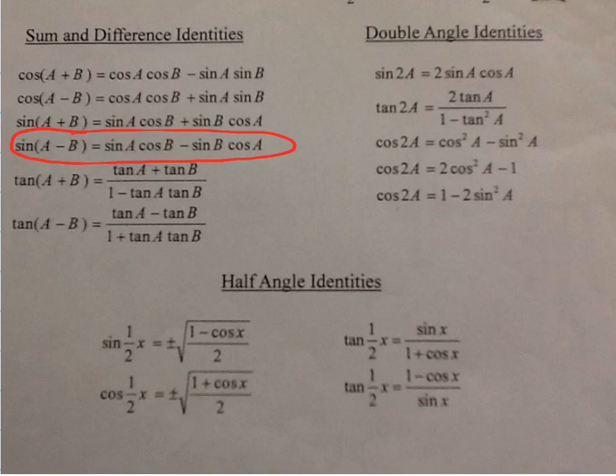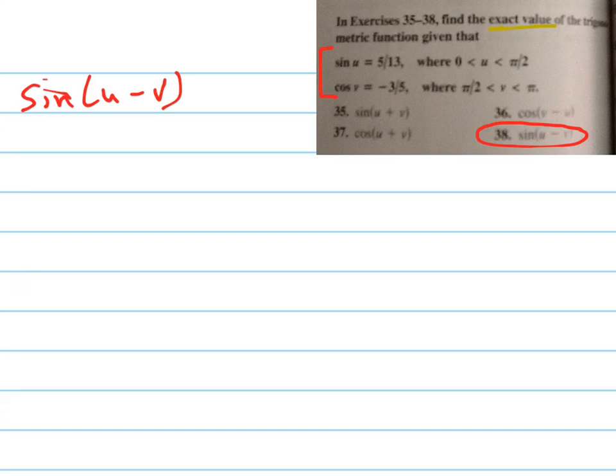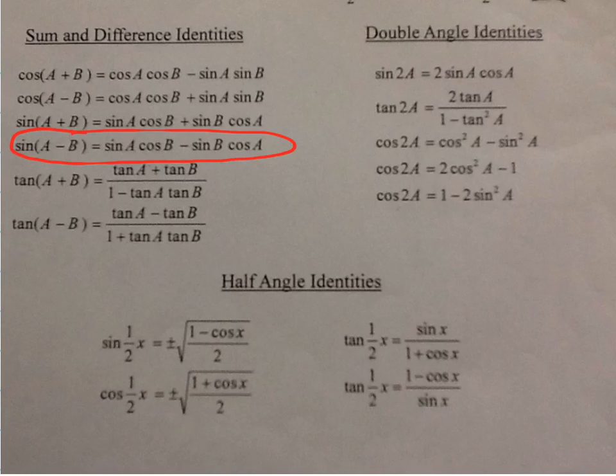So it's sine u cosine v minus sine v cosine u. Let's see if I can remember that. Sine u cosine v minus sine v cosine u. Did I write that right? I think I did.